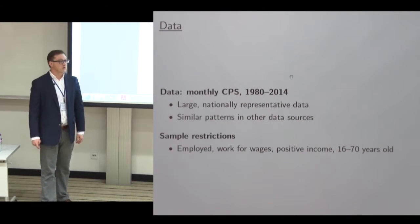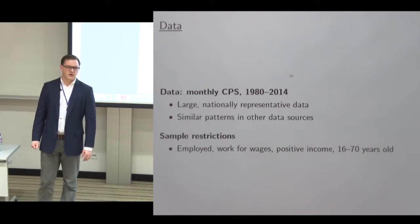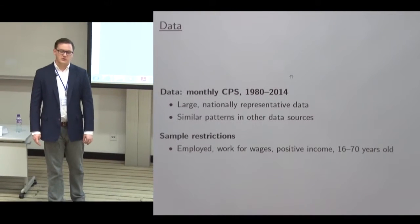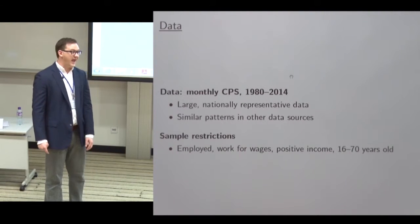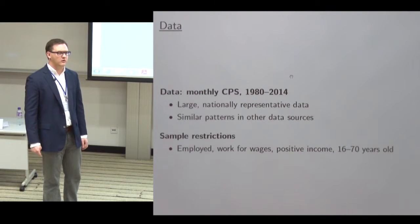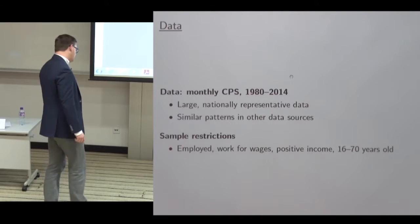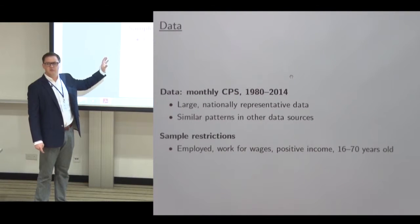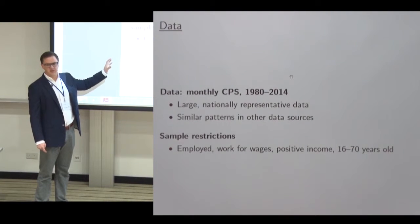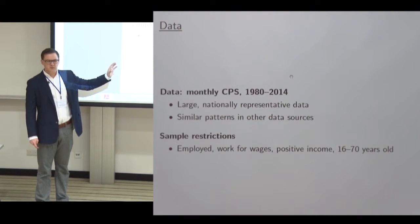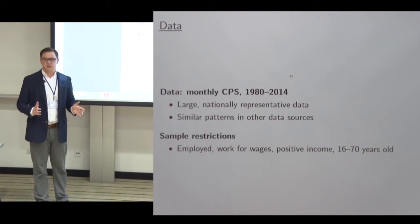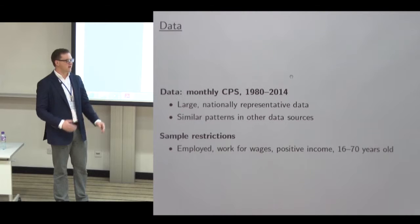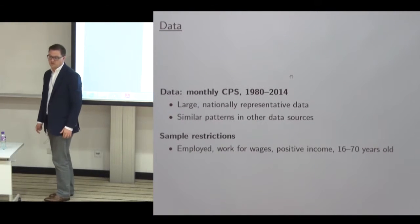I'm going to focus on wage workers between 16 and 70 years old who report positive income. The key restriction is focusing only on wage workers. In most sectors this isn't a big deal, but in agriculture it is — we're throwing out about half to three-quarters of the agricultural labor force in most countries. The reason is that we have well-developed understanding of how to think about wages of wage workers. When it comes to the total income of proprietors who own land, have tractors, and provide their own labor, allocating that income across factors is very difficult both in data and in theory.